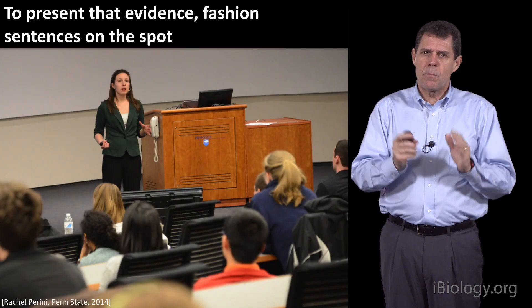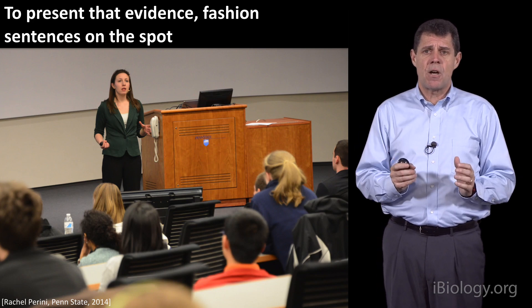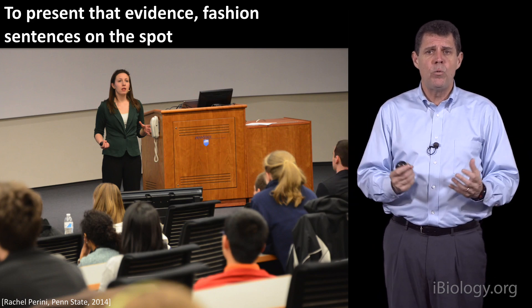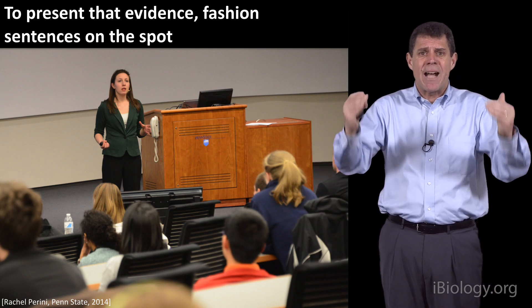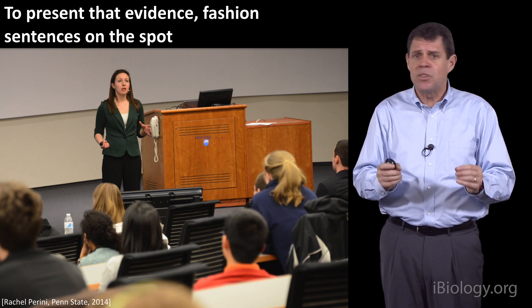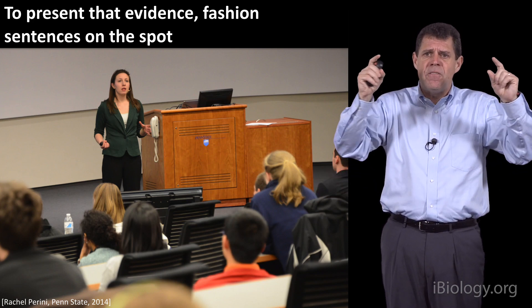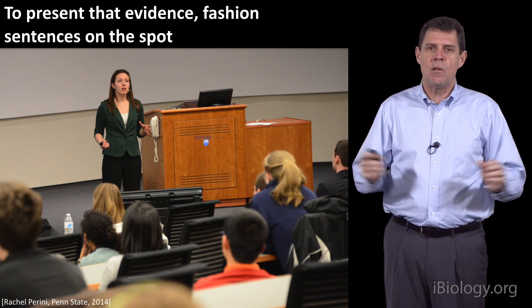We've talked about two principles of the assertion evidence approach: build your talk on messages, not on topics; and support those messages with visual evidence, not bullet lists. The third principle is that when you present that visual evidence, fashion sentences on the spot — show that you own the information. Many people are afraid of this, thinking they need bullet lists to know what to say. But you don't — it is your research, and if you choose visual evidence from your own work, you can present it without bullet lists.